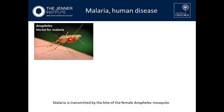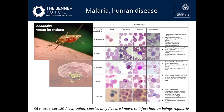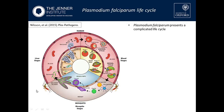Malaria is a human disease transmitted by the bite of the female Anopheles mosquito. This disease is caused by intracellular Plasmodium parasites — of more than 120 Plasmodium species, only five are known to infect humans. Of these, the deadliest is Plasmodium falciparum. It has a complex life cycle with two hosts — the mosquito and the human — and in the human it has two different stages: the liver stage and the blood stage.